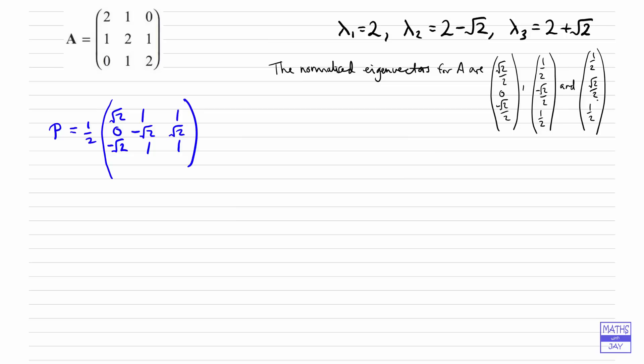And the matrix D, if you've written your matrix P with the eigenvectors in that order then the matrix D must have the eigenvalues in the same order. So this is the diagonal matrix so the eigenvalues appear on the main diagonal. So the first one is 2, the second one 2 minus root 2, and the last one 2 plus root 2. It's a diagonal matrix so everything else must be 0.